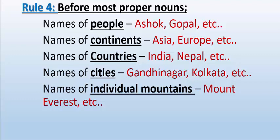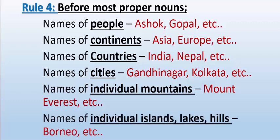Next are names of individual mountains and islands. For example, Mount Everest, Mount Kilimanjaro. Note: if it is a mountain range, like 'the Himalayas,' we do use article. But for individual mountains, article is not used. Similarly, before names of individual islands, individual lakes, and hills, we don't use article — for example, Borneo. If it is a group of islands, like the Andaman and Nicobar Islands, then article 'the' is used. But for an individual island or hill, don't use article.